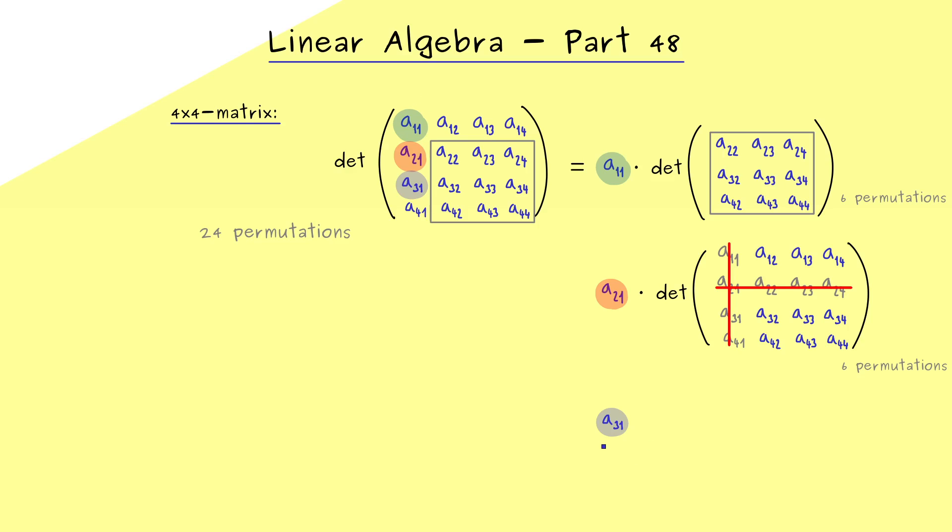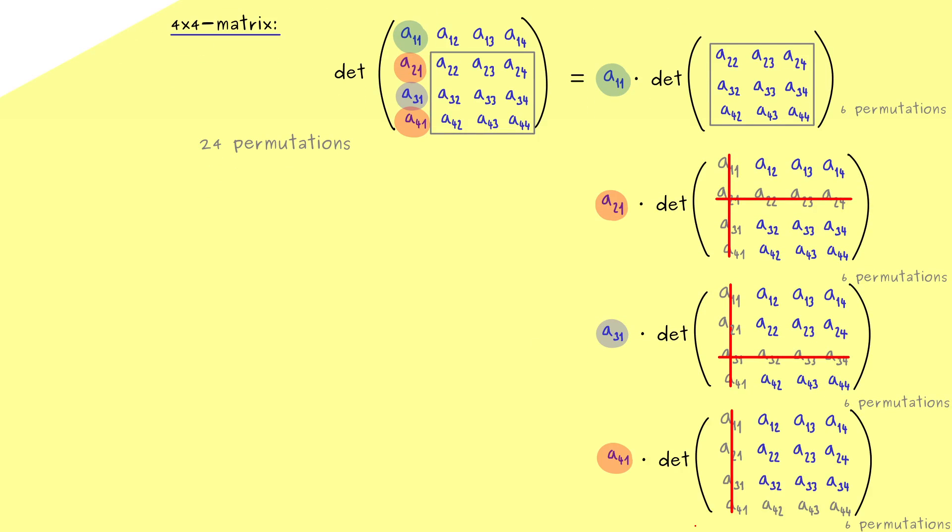So the next factor here is A31 times again a 3x3 determinant. And for that we only have to cross the third row now. So not more complicated as before and then you see, only the last factor here remains. So to summarize that, here we still cross the first column and now the last row. Therefore, here you would calculate the determinant of this 3x3 matrix.